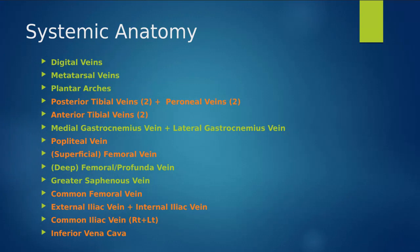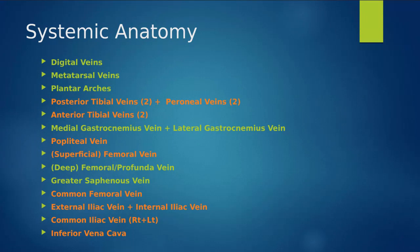Traveling up to the back of the leg, we have our posterior tibial veins and peroneal veins — four veins — joining together to form the tibial peroneal trunk. That travels for a short segment behind the knee. Then the anterior tibial veins come from the front of the calf, loop around the back, and dump into that tibial peroneal trunk as well. The combination of the tibial peroneal trunk and the two anterior tibial veins creates the popliteal vein — still part of the deep system.